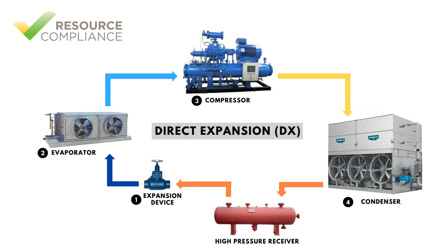The compressor process reduces the volume occupied by the refrigerant, which results in higher pressure as the refrigerant exits the compression. Additionally, when refrigerant vapor is compressed, the temperature of the vapor increases. This is called the heat of compression and is added to the heat already absorbed in the evaporator.